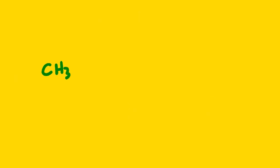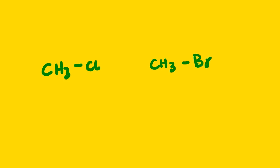Now let us look at another example: chloromethane and bromomethane. Which one has the higher boiling point? Bromomethane will have the higher boiling point because the atomic mass of bromine is greater than the atomic mass of chlorine.